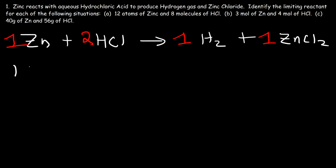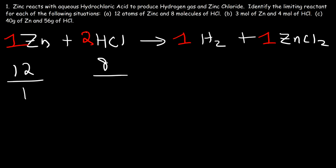In part A, we have 12 atoms of zinc and 8 molecules of HCl. Which is going to be the limiting reactant? The limiting reactant is the one of the two reactants that runs out first in the reaction. A quick and simple way to determine it is to find which one has the lowest quantity per coefficient ratio. We have 12 particles of zinc; the coefficient in front of it is 1, so 12 divided by 1 is 12. For HCl, the coefficient is 2, so 8 divided by 2 is 4. HCl has the lowest quantity per coefficient ratio, so HCl is the limiting reactant. It's going to run out first in this reaction.